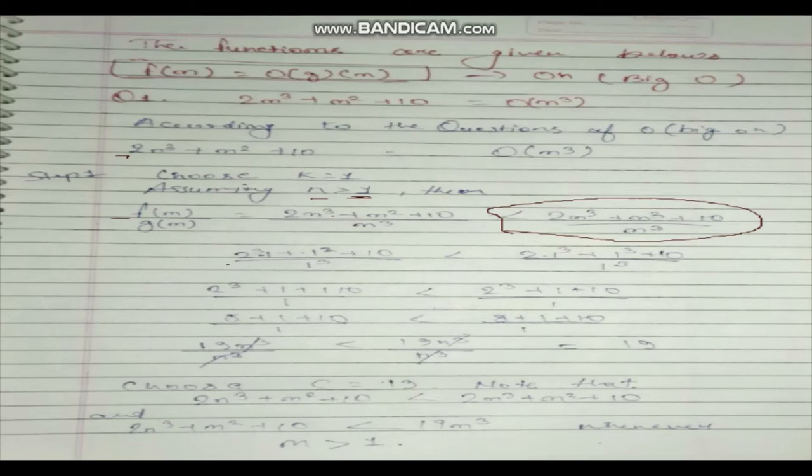I will tell you how this happened. This is like: k is 1, n is 1. Put it like this: 2 into 2, and n cube will be 1, plus 1, plus 10. Obviously, here we will get 19, and below it is 1. 1 is n cube, and 19 n cube we will cut out and we will get 19.